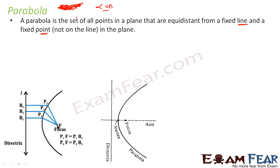So, this is a fixed point and this is a line. Points which are equidistant from the line and the point. P1, P2, P3 are the points which are equidistant from the fixed point — that is the focus — and also equidistant from line L. So P3F is equal to P3B3. Similarly, P2F is equal to P2B2, and P1F is equal to P1B1.